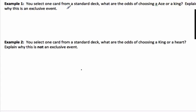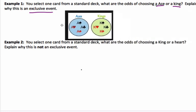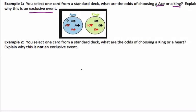You select one card from a standard deck. What are the odds of choosing an Ace or a King? Why is this a mutually exclusive event? Well, if I consider this diagram here, this is all the possible Aces and this is all the possible Kings. It's impossible for me to draw with one card an Ace and a King at the same time. It's one or the other, not both. That's why it is an exclusive event.